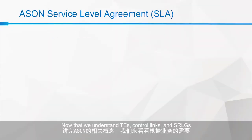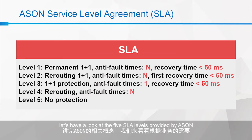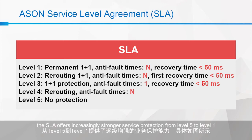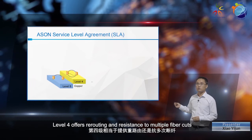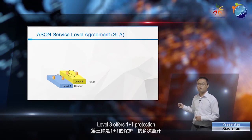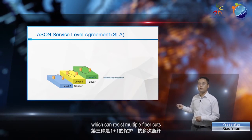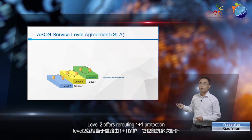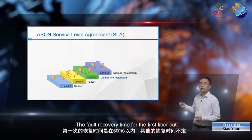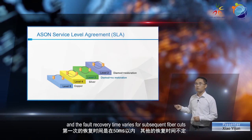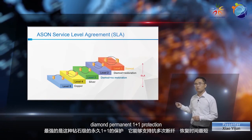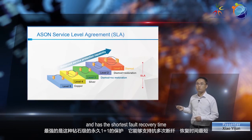Now that we understand TEs, control links, and SRLGs, let's have a look at the five SLA levels provided by ASAN based on different service requirements. As shown in the figure, the SLA offers increasingly stronger service protection from level 5 to level 1. Level 5 offers no protection. Level 4 offers rerouting and resistance to multiple fiber cuts. Level 3 offers 1+1 protection, which can resist multiple fiber cuts, with fault recovery time for the first fiber cut of less than 50 milliseconds. Level 2 offers rerouting and 1+1 protection, which can resist multiple fiber cuts; the fault recovery time for the first fiber cut is less than 50 milliseconds, and the fault recovery time varies for subsequent fiber cuts. Level 1 offers the strongest protection, diamond permanent 1+1 protection, which can resist multiple fiber cuts and has the shortest fault recovery time.